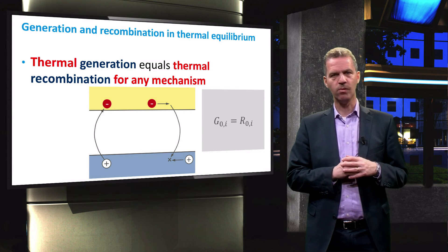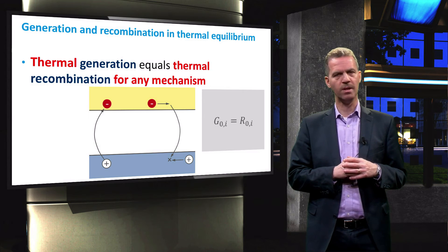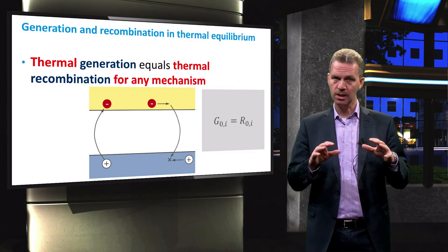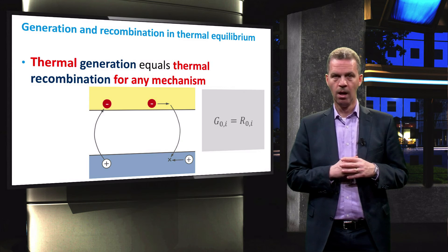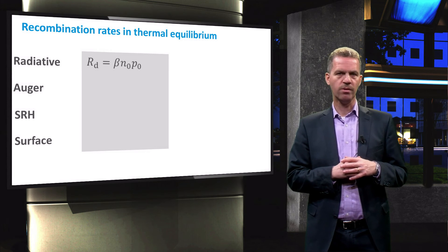In steady state equilibrium, the generation rate and recombination rate may be spatially different.